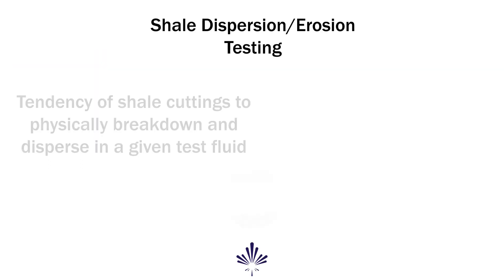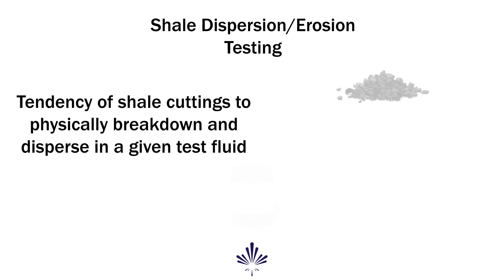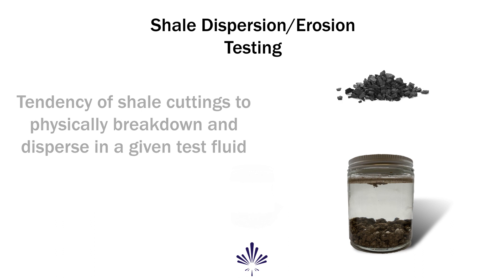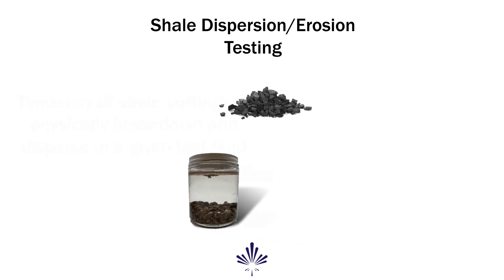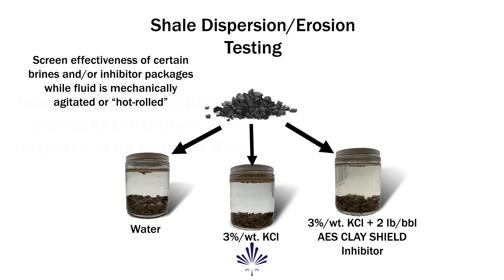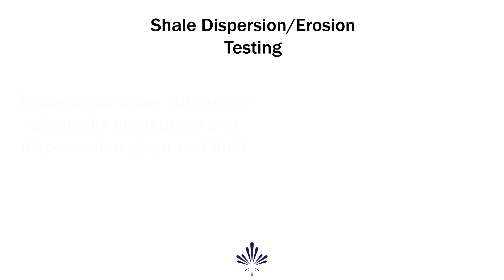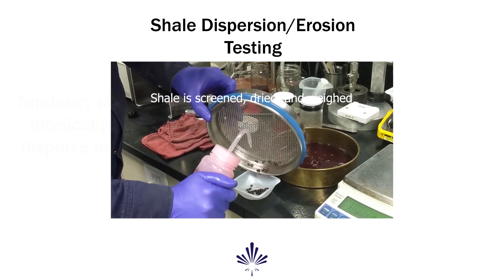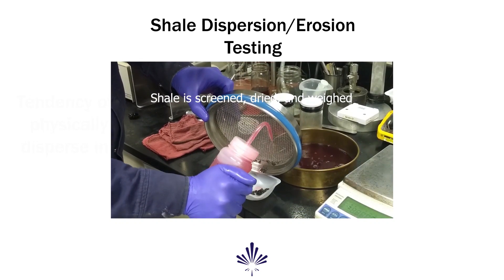Shale dispersion testing measures the likelihood or degree to which shale cuttings will break down and remain in solution when interacting with a drilling fluid. This test can be used as a tool to design fluid systems that minimize the interaction between a drilling fluid and shale formations while drilling, or to screen the effectiveness of inhibitor additives in order to preserve the integrity of shale cuttings and prevent accumulation of colloidal fines in a mud system. Shale cuttings are screened, dried, and weighed before being placed into a test solution.